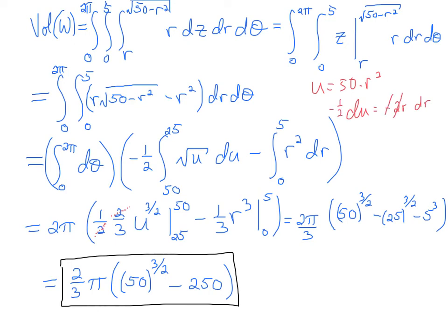And then if I multiply both sides by minus 1 half, the r and dr get substituted for minus 1 half du.